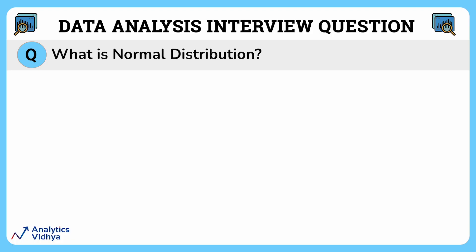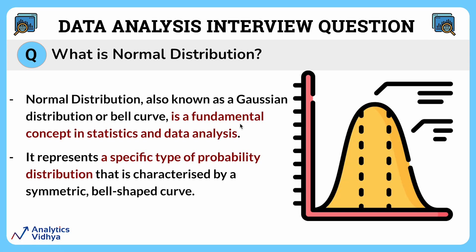This question asks what a normal distribution is. Well, a normal distribution, also known as a Gaussian distribution or bell curve, is a fundamental concept in statistics and data analysis. It represents a specific type of probability distribution that is characterized by a symmetric bell-shaped curve.